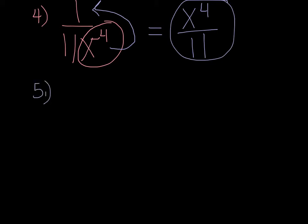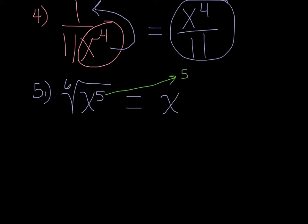Number 5: we want to write the 6th root of x to the 5th using rational exponents. That's going to be x to the 5 over 6 power. The exponent is the numerator, and the radical index is the denominator.